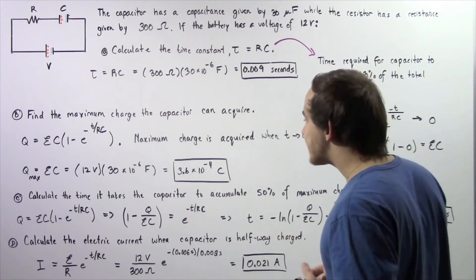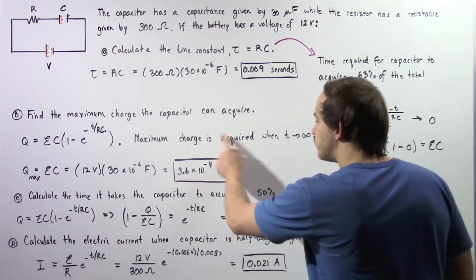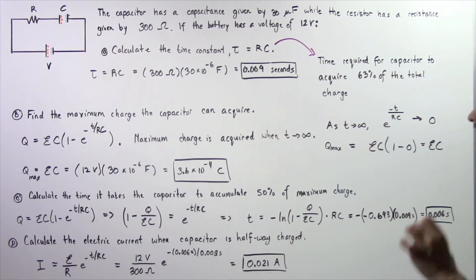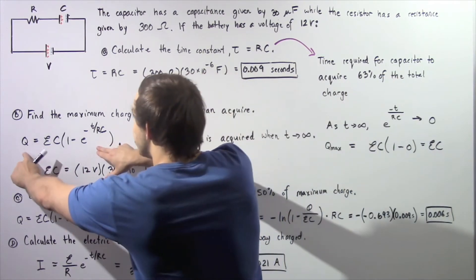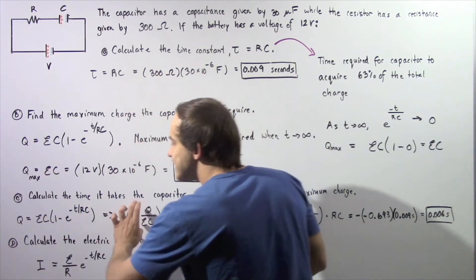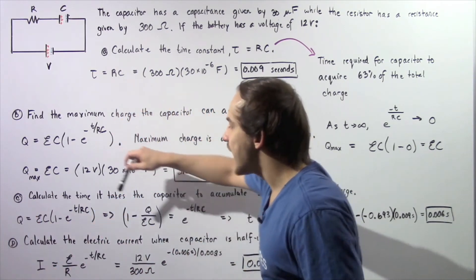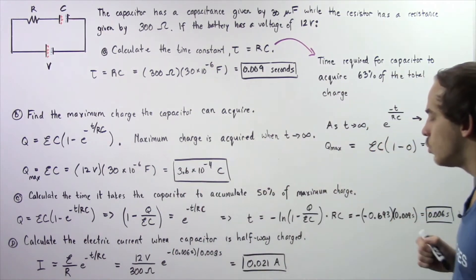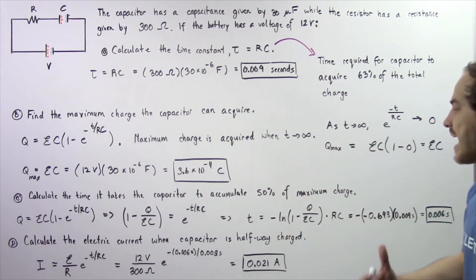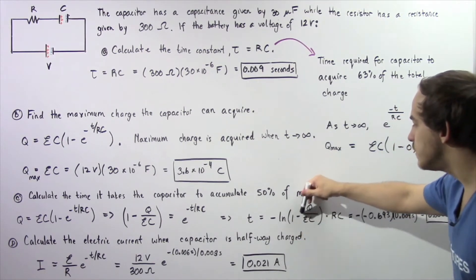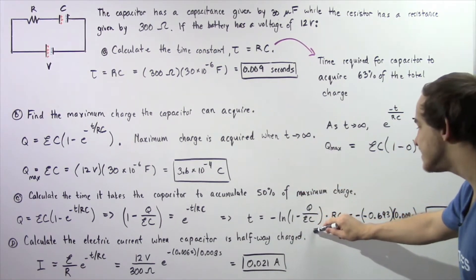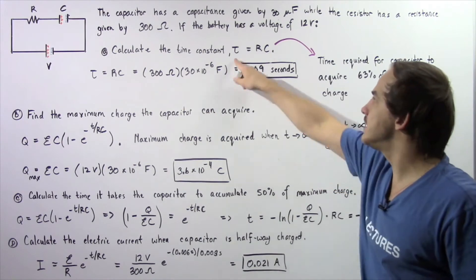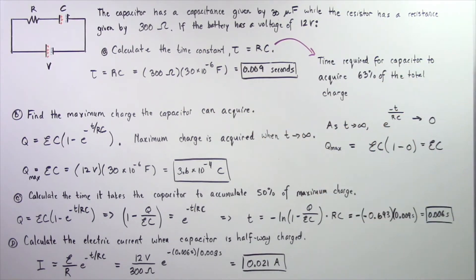50% of the maximum charge is 0.5 times 3.6 times 10 to the negative 4, which gives us 1.8 times 10 to the negative 4 coulombs. We apply the charge equation, rearrange it, and solve for time. The time equals negative natural log of (1 minus Q divided by V times C), multiplied by RC — our time constant tau calculated in part A.